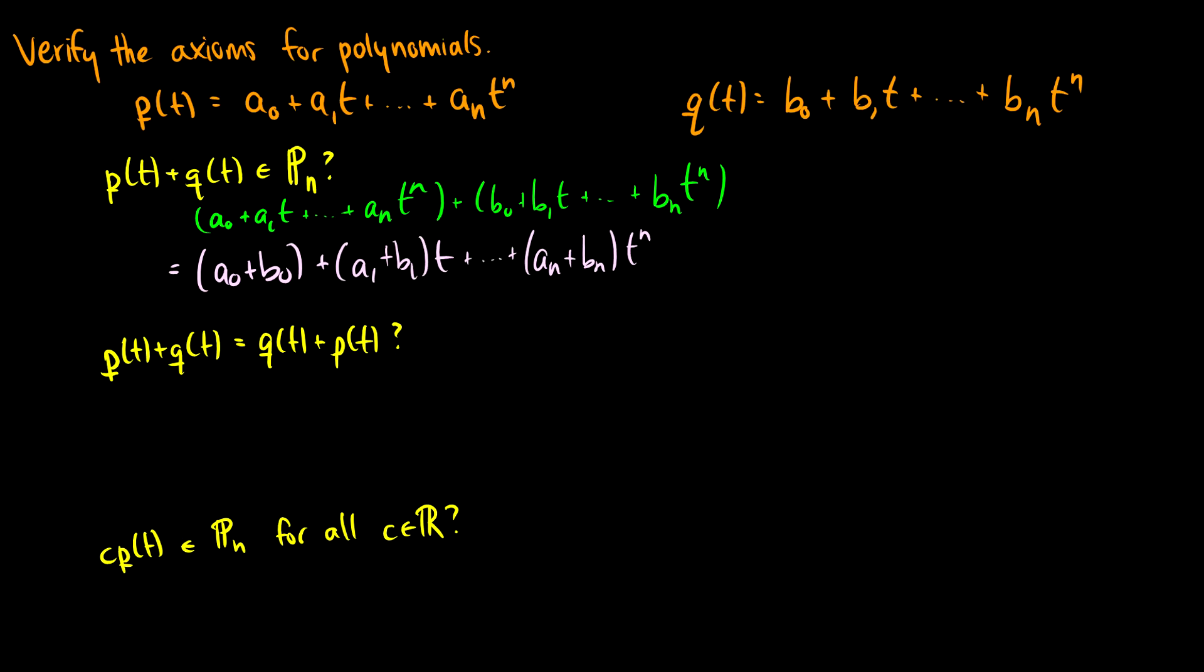So this is in our space, this is good, all of these are good, therefore this axiom is satisfied. What about if we have polynomial p plus q, this is equal to q plus p. Well, we already have this first part here, so I'm just going to take this, and we'll write it down,